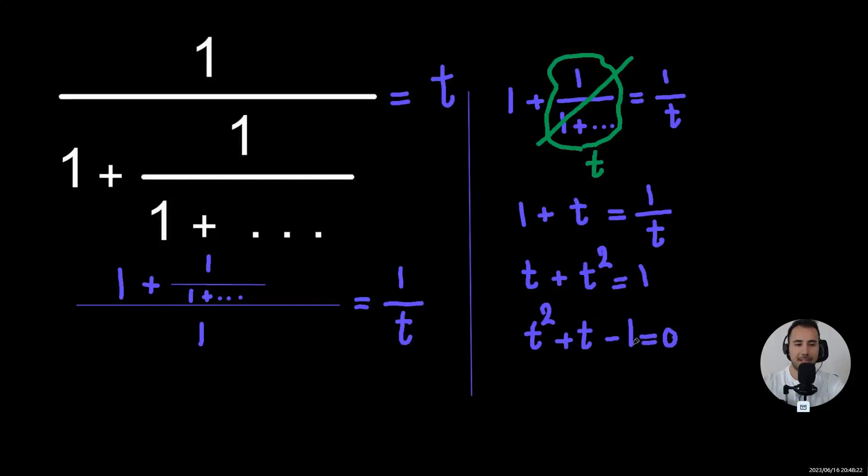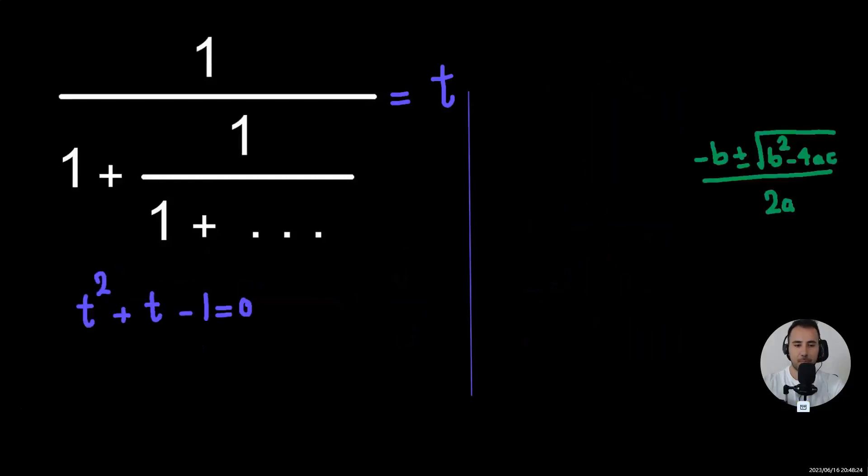So this is the quadratic formula in case you have forgotten it. So a is one, b is one, c is negative one. So we're going to have two values for T.